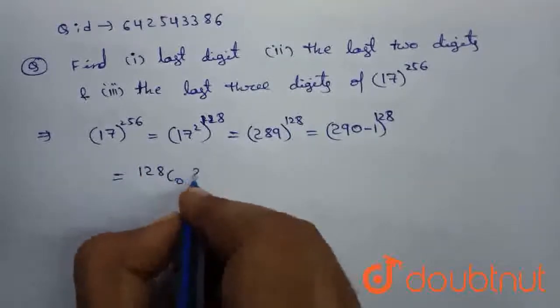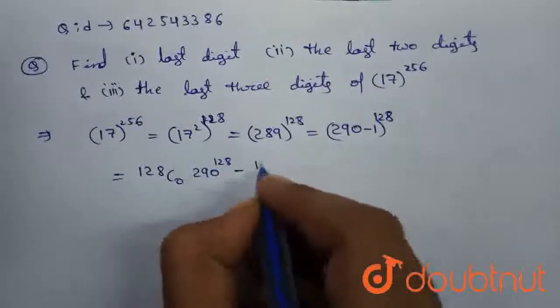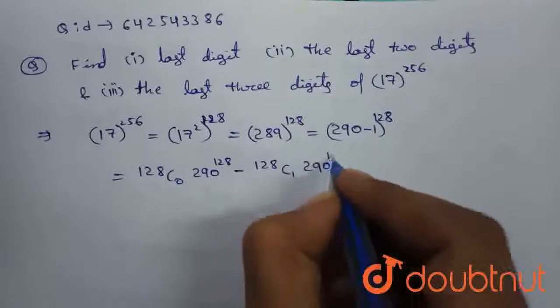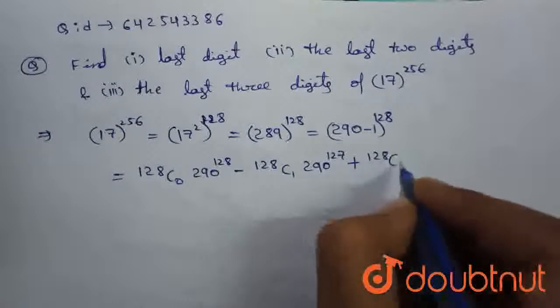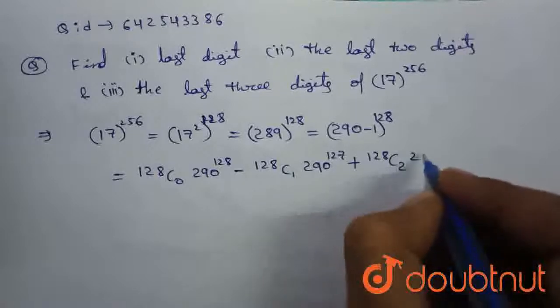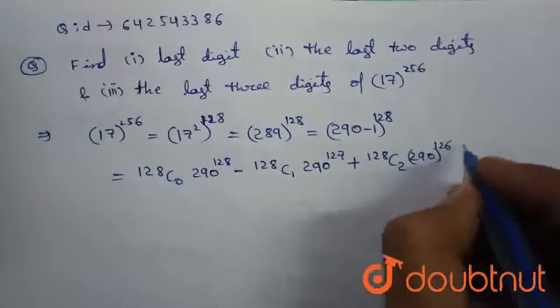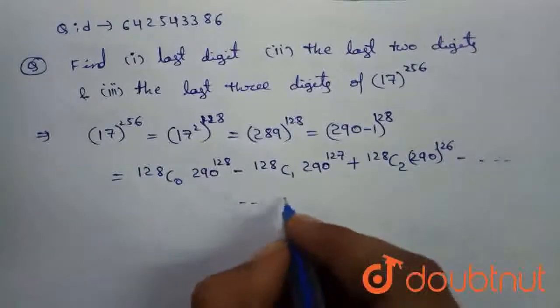128 C0 into 290 power 128 minus 128 C1 290 power 127 plus 128 C2 290 power 126, etc. And the last three, last four terms are...